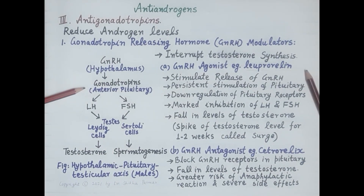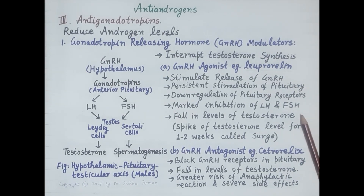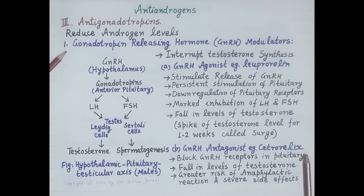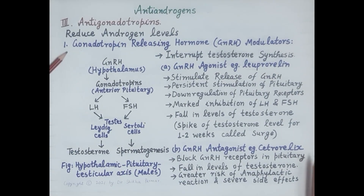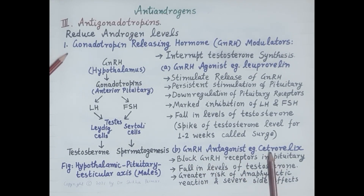This marked inhibition of LH secretion causes a fall in testosterone levels in the blood — this is how GnRH agonists produce a fall in testosterone levels. The second type of GnRH modulators are GnRH antagonists, for example cetrorelix.